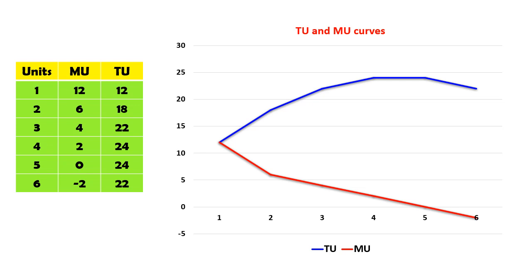In this figure, glasses of water are measured along the x-axis, and total utility and marginal utility are measured along the y-axis. The total utility is represented by the blue curve — it first increases, reaches a maximum, and then starts to decrease. Marginal utility is represented by the red curve — it falls continuously, becomes zero, and then becomes negative.